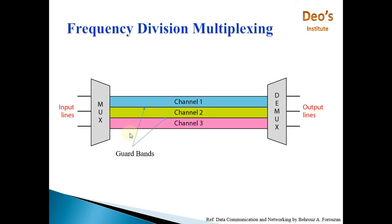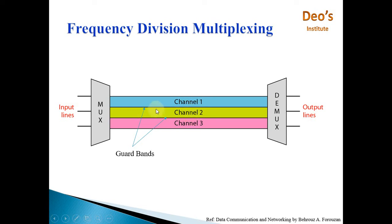What is Frequency Division Multiplexing? Again, there will be a multiplexer at the sender side. If there are N input lines, the link will be divided into N number of channels. Consider there are three input lines, so the entire link is divided into three different channels — channel 1, channel 2, and channel 3. Channels are separated by guard bands, meaning there is some amount of bandwidth between them which is free of signal.